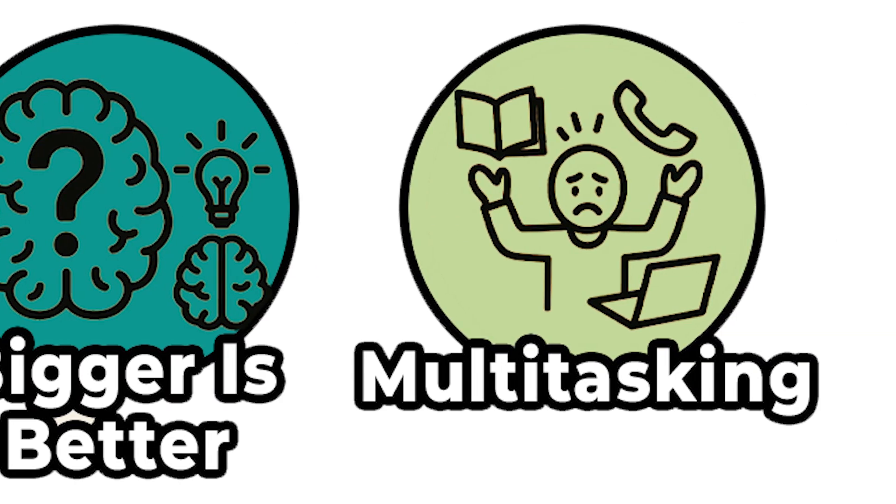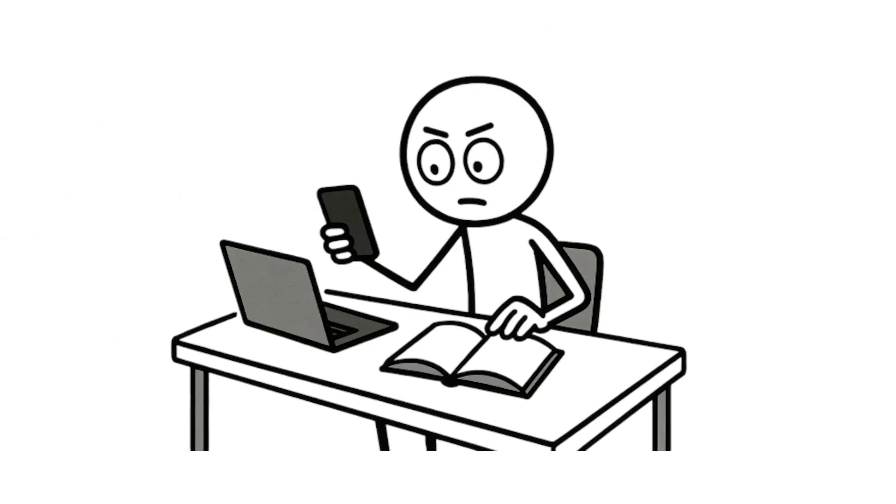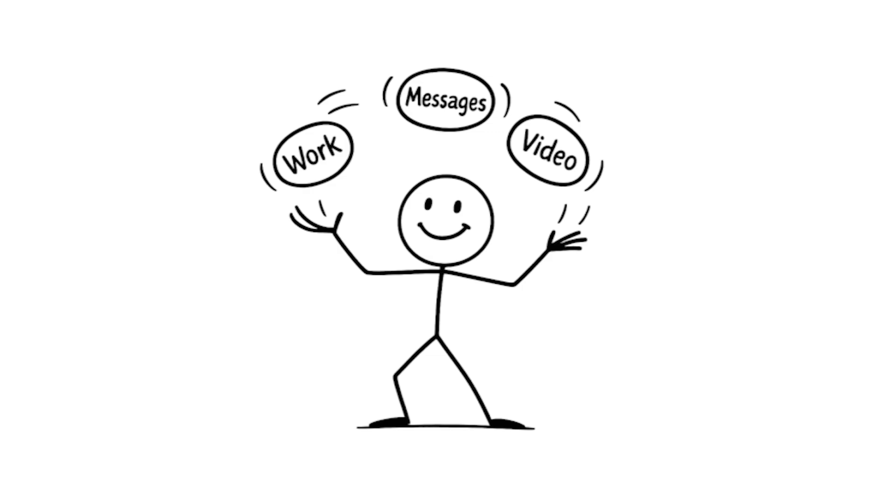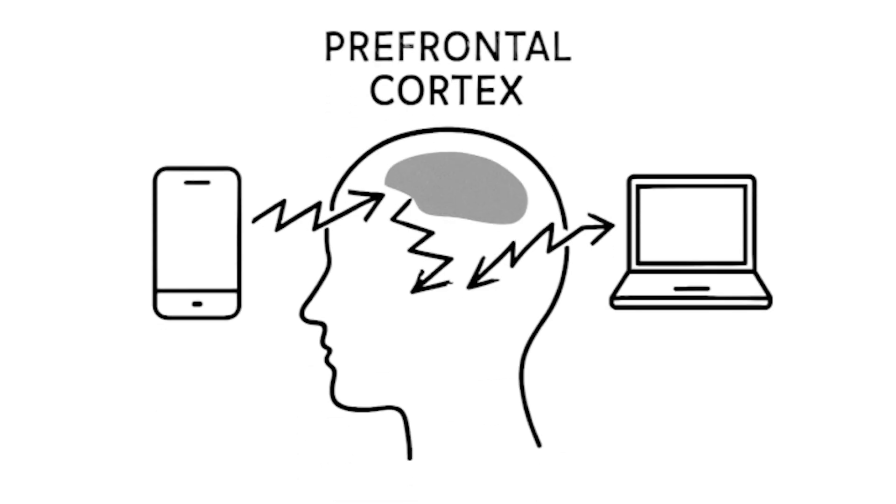Multitasking works. You're probably multitasking right now, watching this video while scrolling comments, maybe answering texts. We love to think we're productivity machines juggling multiple tasks at once. But here's the truth. Your brain doesn't multitask, it task switches. When you think you're multitasking, your prefrontal cortex is rapidly switching attention between different tasks through a process called task switching.